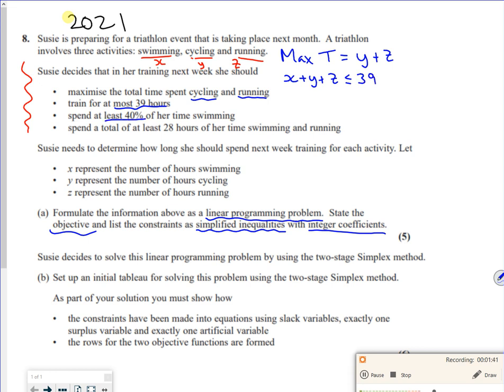At least 40% of the time swimming. So swimming is X. At least 40% is 2 fifths of the total time, which is X plus Y plus Z. If I multiply through by the 2 and multiply through by the 5, I get 5X is greater than or equal to 2X plus 2Y plus 2Z. The convention is to try to keep your integer values positive. So I'm going to take the 2X over and make it 3X is greater than or equal to 2Y plus 2Z. Everything's an integer and I've nicely made it all positive.